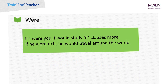Note that the past simple form is slightly different from usual in the case of the verb 'be'. Whatever the subject, the verb form is 'were', not 'was'. For example: If I were rich, I'd buy a big house — as opposed to: If I was rich, I'd buy a big house.